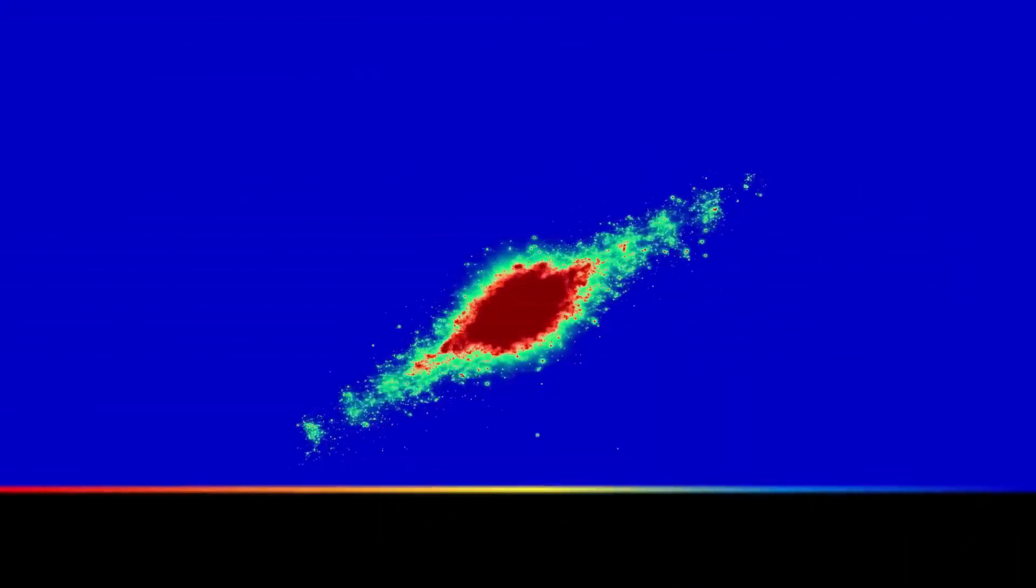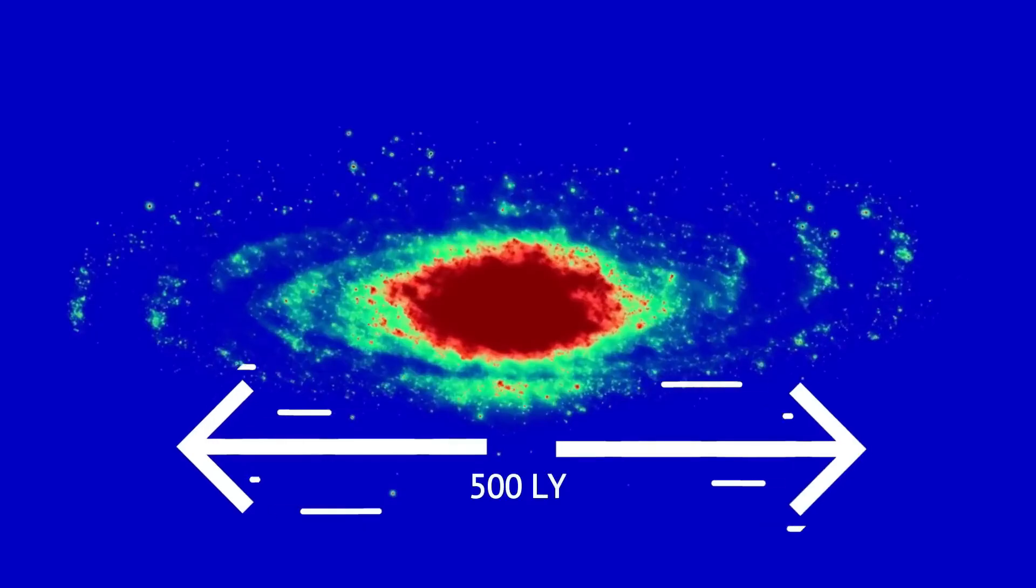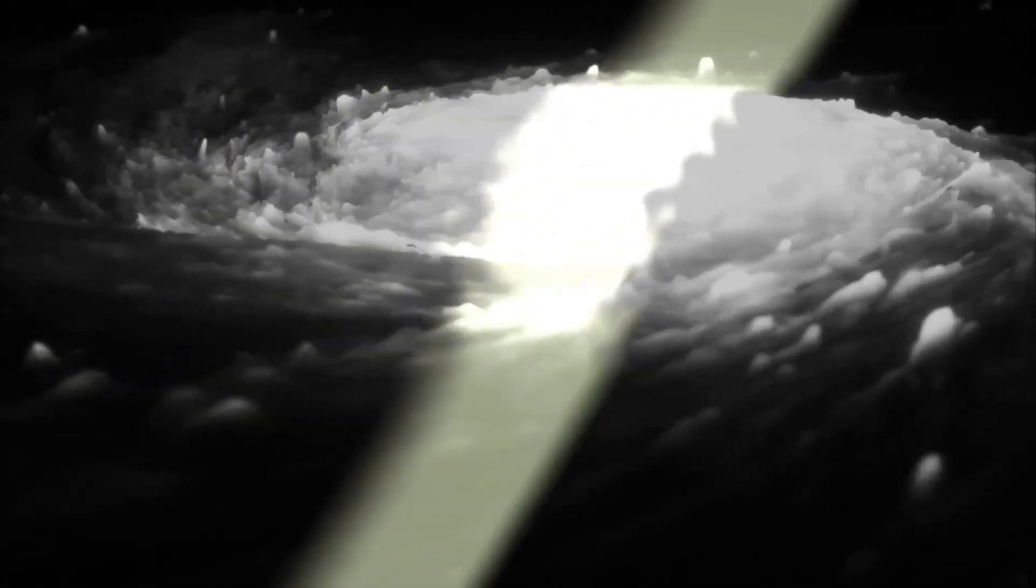New research has uncovered an intriguing mystery - that the majority of galaxies appear to be rotating in the same direction. The lines formed by the peaks here allow us to identify the direction of the curve of the galaxy's arms and consequently their spin direction.